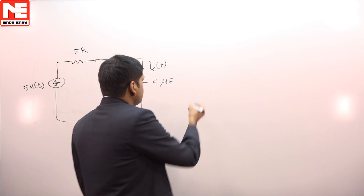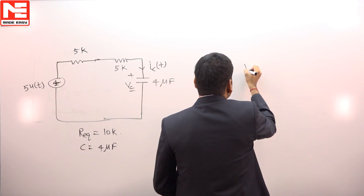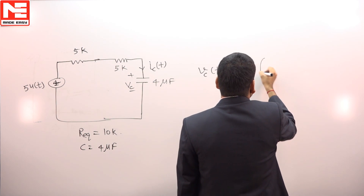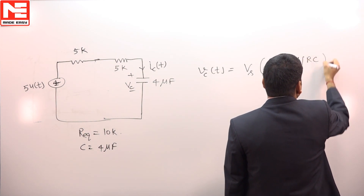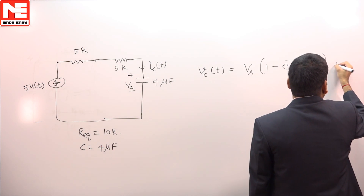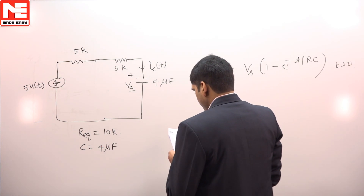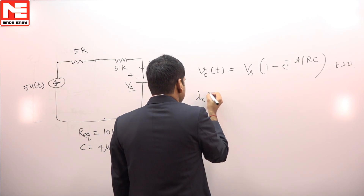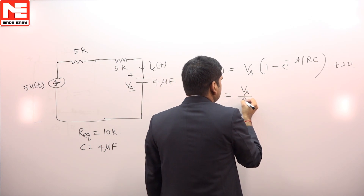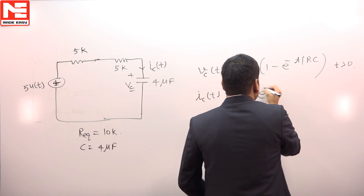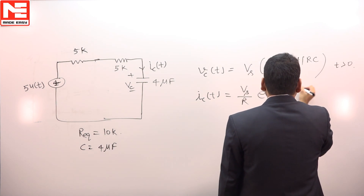For a simple RC circuit, V_C(T) is equal to V_S times (1 minus e^(−T/τ_RC)), for T greater than 0. And from this, I_C(T) is equal to V_S divided by R, times e to the power of minus T divided by RC.